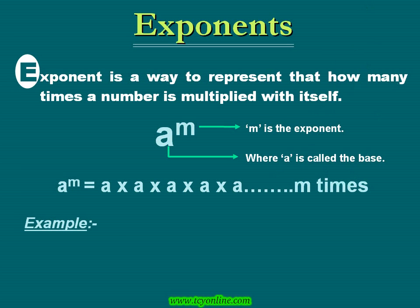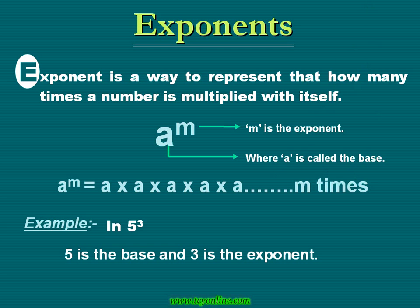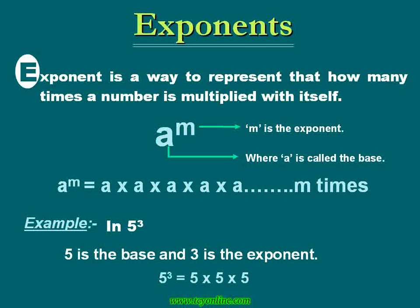In 5 raised to the power 3, 5 is the base and 3 is the exponent. So 5 raised to the power 3 means we are multiplying number 5 by itself 3 times.